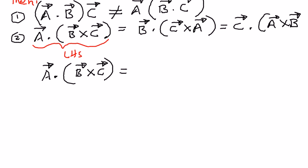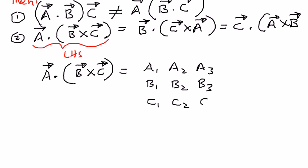If vector A has components A1, A2, A3, vector B has components B1, B2, B3, and vector C has components C1, C2, C3, then if we take the determinant of this matrix, we should be able to find the dot product vector A times the cross product of vector B times vector C. We will also prove this property in an upcoming video.